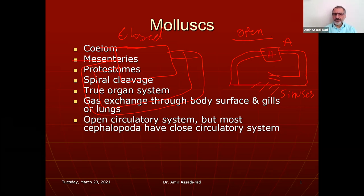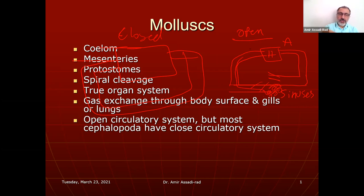In the open system, the blood percolates around cells of the liver, brain, and so on, then goes back into the vein and heart. In a closed system, cells are surrounded by capillaries. That's the key difference.